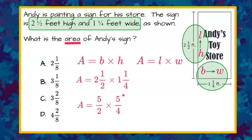Now to multiply, we're going to multiply our numerators, and then multiply our denominators. 5 times 5 is 25, and 2 times 4 is 8, giving us 25 eighths.